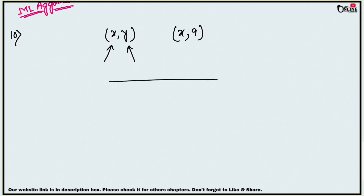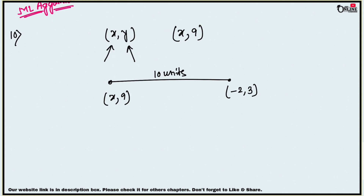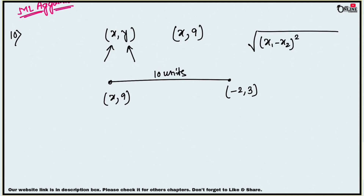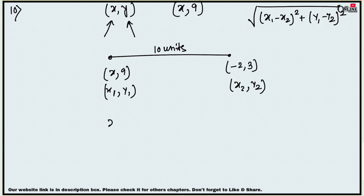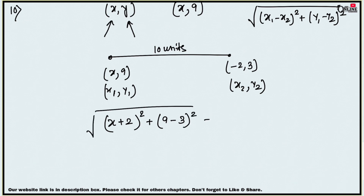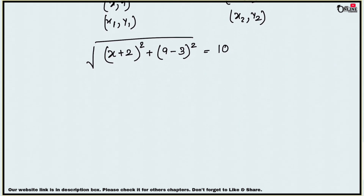One end is (x, 9) and the other end is (−2, 3), and the length is 10 units. Use the distance formula: root over [(x1 − x2)² + (y1 − y2)²] equals 10. Substituting: root over [(x − (−2))² + (9 − 3)²] equals 10, which gives root over [(x + 2)² + 36] equals 10.